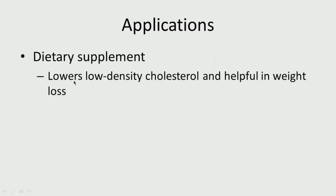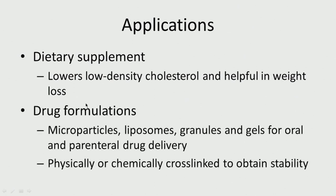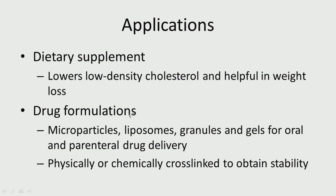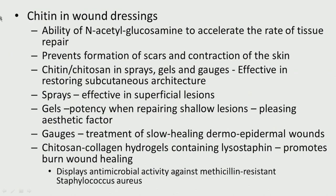Chitosan is used as a dietary supplement and lowers low density cholesterol, helping in weight loss and addressing cardiovascular issues. It is used in drug formulation — having three functional groups (primary OH, secondary OH, and NH2), many drug formulations are made including microparticles, liposomes, granules, and gels for oral and parenteral drug delivery. It can be physically or chemically crosslinked to improve the stability of chitosan.